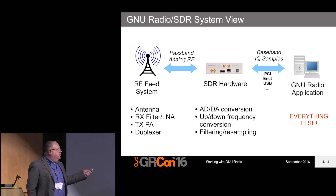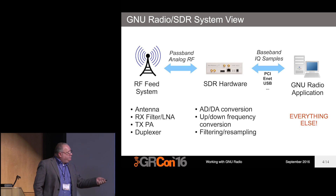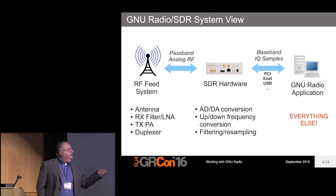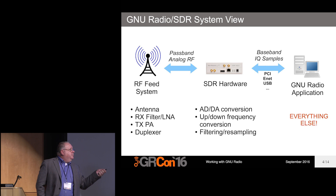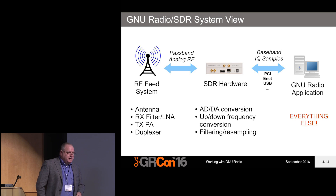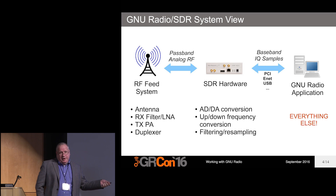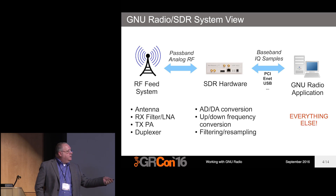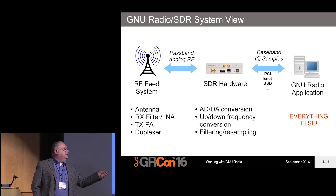There are heterogeneous processing environments where some of what you would do here can now be done in devices that have FPGAs. In particular, the Ettus Research hardware with the RFNOC system, which we'll see a lot of this week, is integrated into GNU Radio such that what still looks like a single application actually has processing distributed over potentially multiple USRPs and the GNU Radio application running.